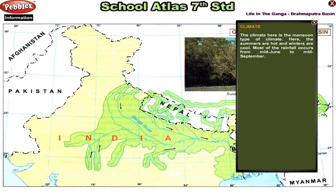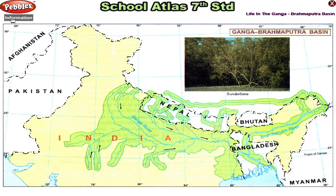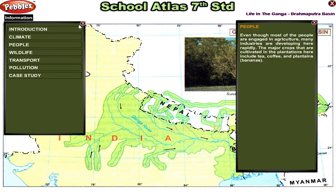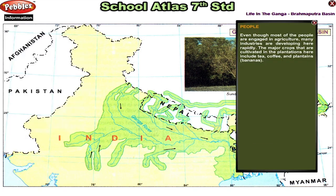Climate. The climate here is the monsoon type of climate. The summers are hot and winters are cool. Most of the rainfall occurs from mid-June to mid-September. People. Even though most of the people are engaged in agriculture, many industries are developing here rapidly. The major crops cultivated in the plantations here include tea, coffee, and plantains.